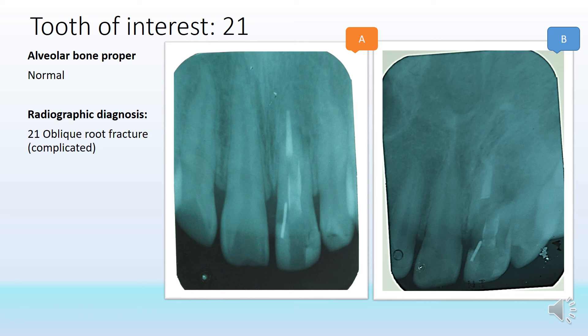The alveolar bone proper appears largely normal, which reconfirms this is likely recent trauma. The radiographic diagnosis is that 2-1 has an oblique root fracture. Had the tooth been radiographed after a couple of days, more radio-opacity or radiolucency at the apex indicating bone activity would be visible. Since this radiograph was taken immediately after fracture or in an acute phase, there are minimal changes at the apex, but the oblique fracture is definite. The tooth is a previously root canal treated tooth, so the tooth itself may not be painful, though the patient may have pain due to trauma to adjacent tissues.